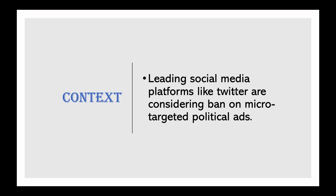Now, in what context are we studying this? Leading social media platforms like Twitter are considering a ban on micro-targeted political ads. The new policy details will be unveiled next month. They would ban ads on political issues as well as from candidates, in response to growing criticism over misinformation from politicians on social media. Explaining the ban, Twitter CEO Jack Dorsey tweeted that while internet advertising is incredibly powerful and very effective for commercial advertisers, that power brings significant risks to politics. He said the reach of political messages should be earned and not bought.